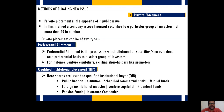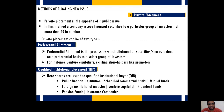Why do qualified institutional buyers subscribe to a particular company's shares? The answer is because they have a lot of money meant for investing. For example, if you take an insurance company, the premiums collected run into crores, and these insurance companies invest those premiums in various private placements.